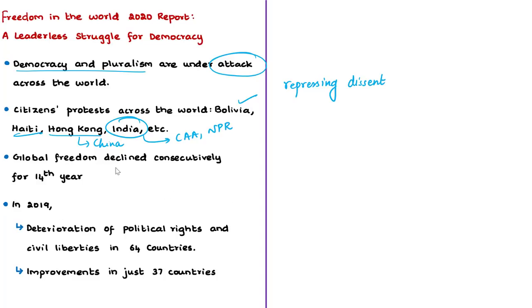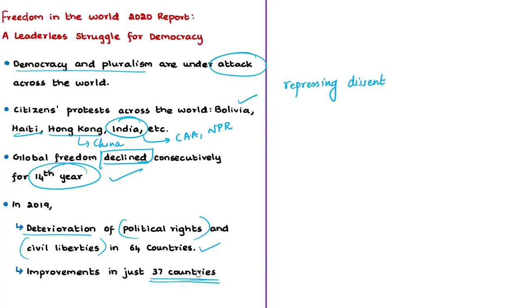As a result, the report found that global freedom has declined consecutively for the 14th year. In 2019, individuals in 64 countries experienced deterioration in their political rights and civil liberties, while only individuals in 37 countries experienced improvements. Worryingly, not just authoritarian states but also democratic governments are repressing ethnic, religious, and other minority groups.